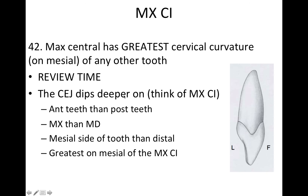The CEJ dips deeper on anterior teeth than posterior teeth — remember it's anterior because the maxillary central is an anterior tooth. The CEJ dips deeper on maxillary teeth than mandibular, and deeper on the mesial side than the distal. The greatest CEJ dip is on the mesial of the maxillary central incisor.